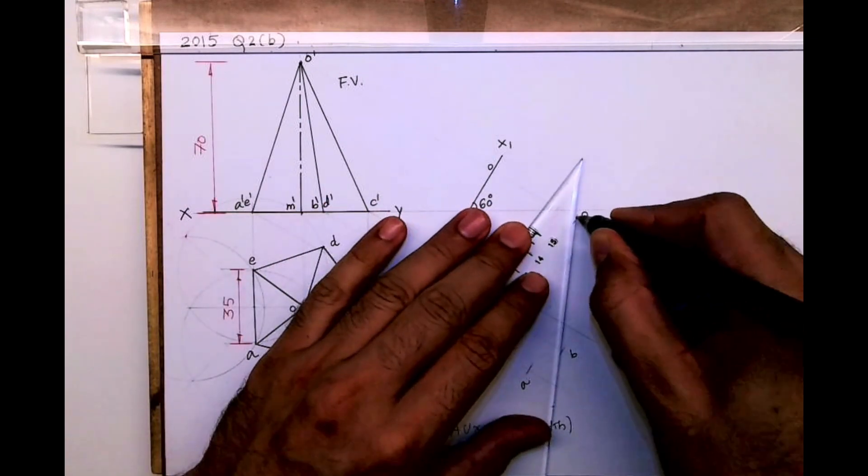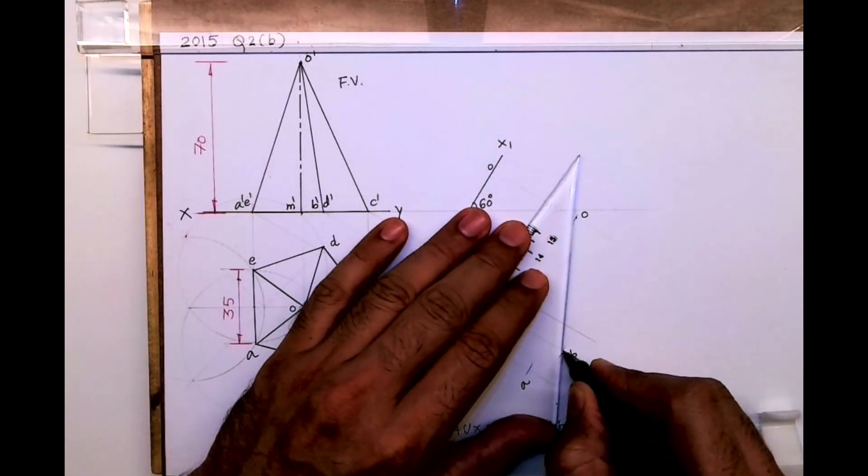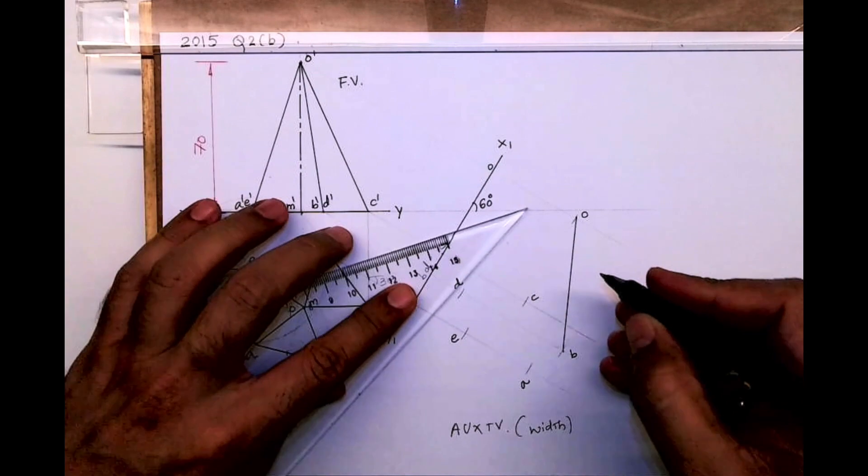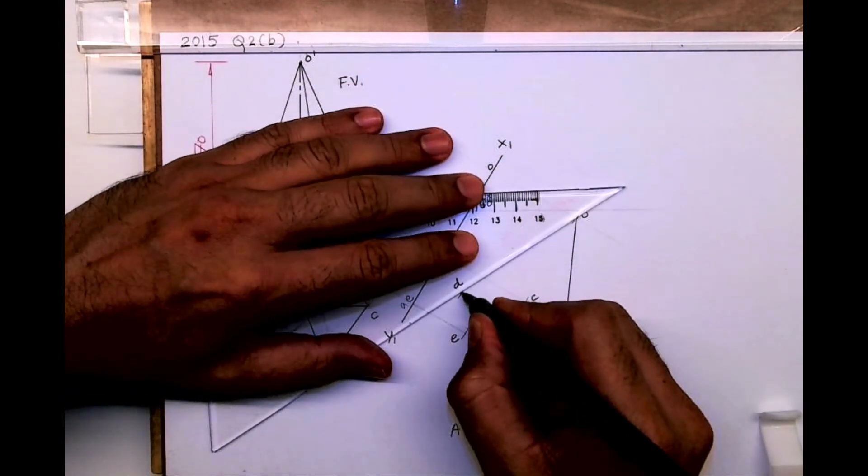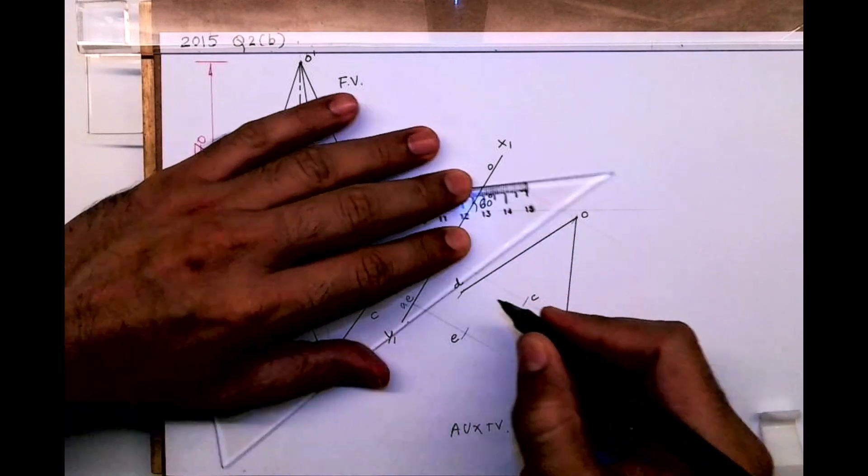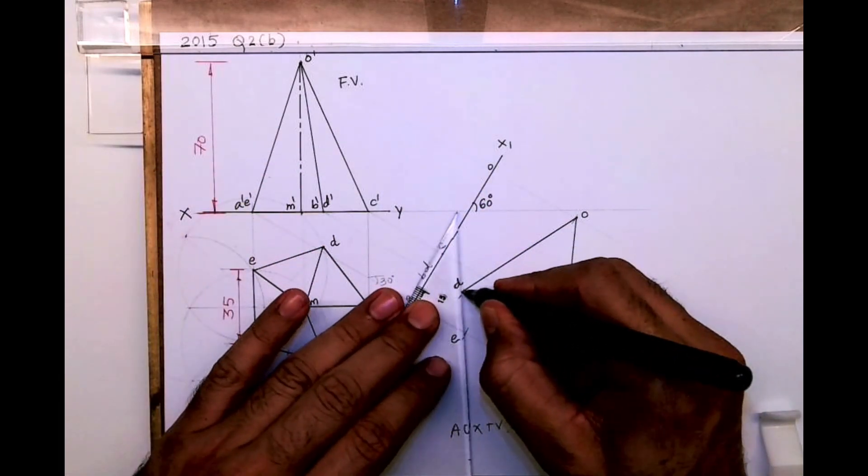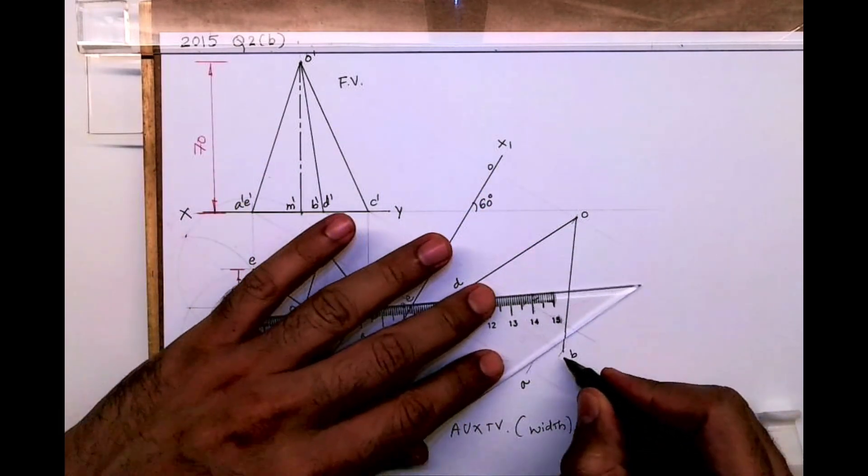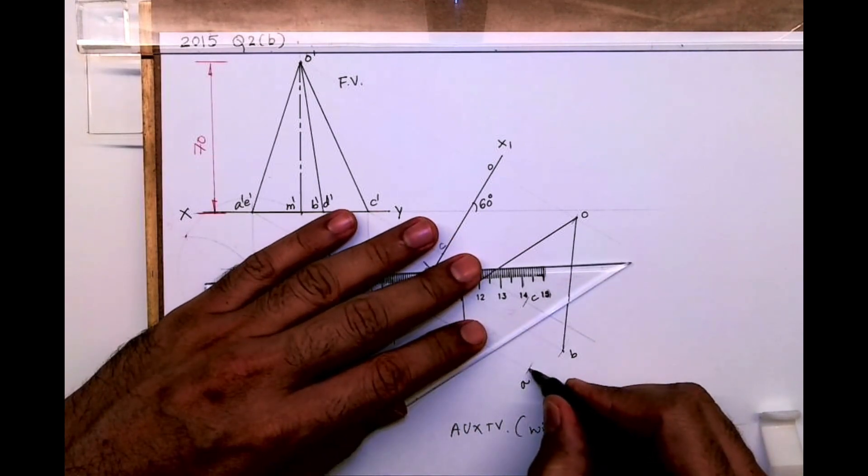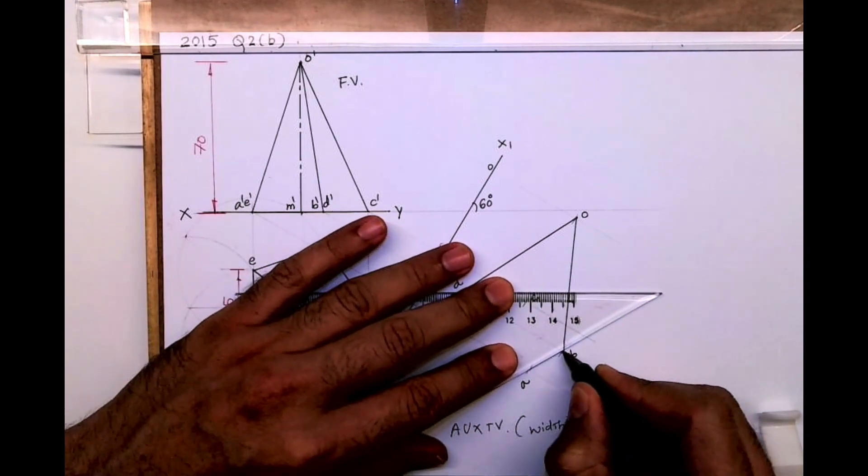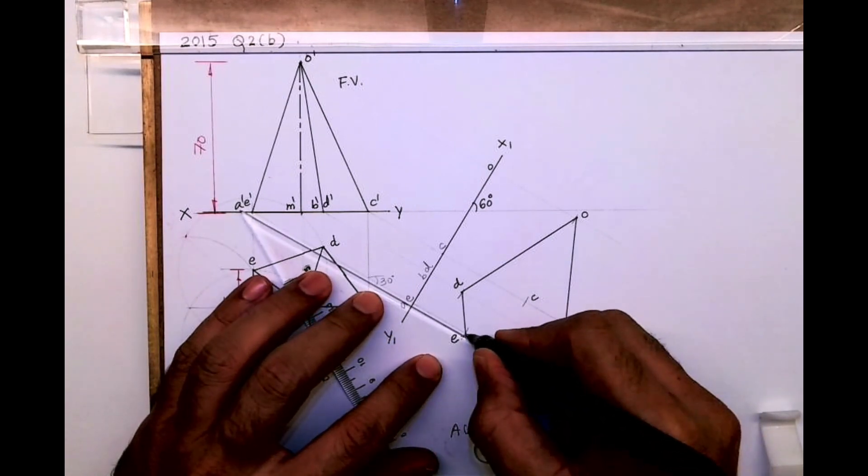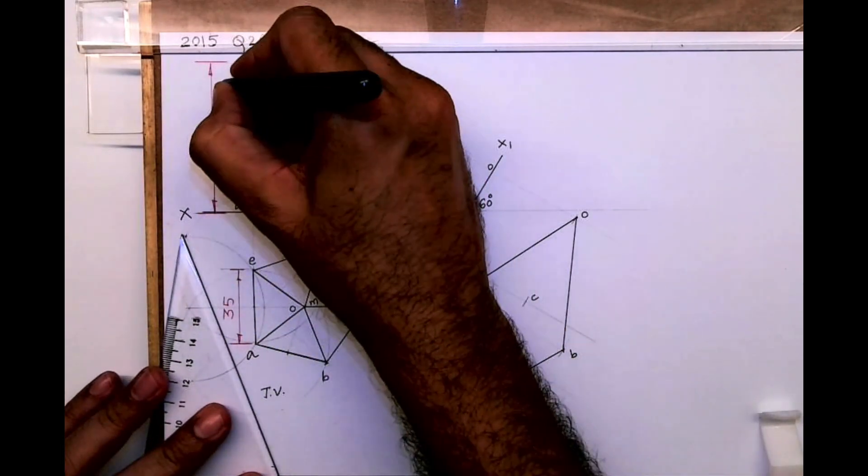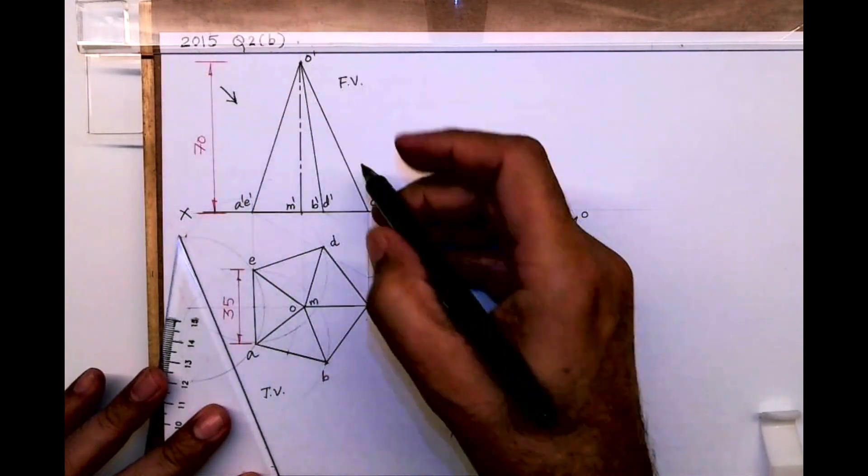Now, the first thing we need to do - from visibility point of view, always draw the boundary line. So what I will do is join all the boundary points. Once I am done with all the boundary points, I will see from here.